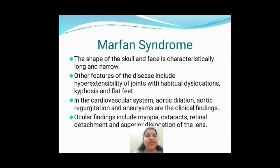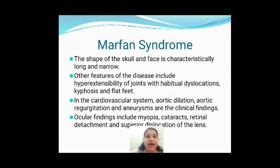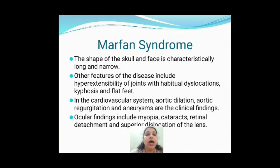The shape of the skull will be long and narrow, and there will be hyperextensibility of the joints. In the cardiovascular system — the second system affected — you will see aortic dilation, aortic regurgitation, and mitral valve prolapse can sometimes be seen. These are the cardiovascular manifestations.